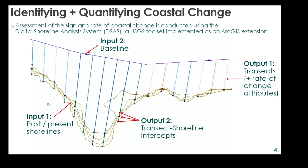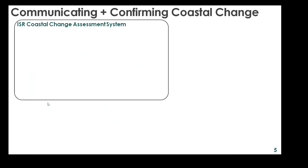The second output layer contains points marking intersections between the transects and the historical shorelines. From these outputs, we can see that the visual evidence seen in the previous two images is borne out. The process begins with sourcing or creating a set of historical and present shorelines representing the period of interest. This currently depends on expert knowledge, though we hope it will be possible to automate the process.